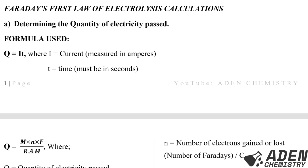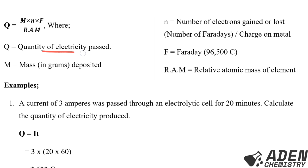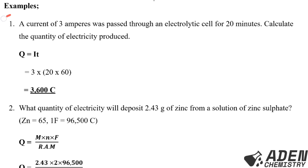The second formula is: Q equals M multiplied by N multiplied by F, then divided by RAM. Here Q is the quantity of electricity passed, M is mass in grams deposited, N is the number of electrons gained or lost (i.e., the number of Faradays, or the charge/valence of the metal), F is Faraday's constant equal to 96,500 Coulombs, and RAM is the relative atomic mass of the element.